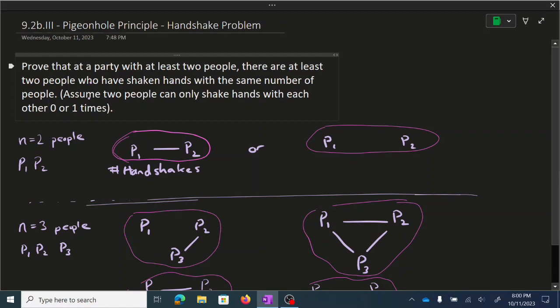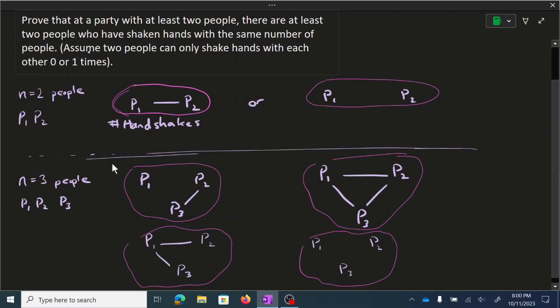So for me personally, when I read this, I get overloaded with hands, shaken people. I mean, just what even is a handshake, so forth. So I like to just go through case by case with small amounts of n equals two and n equals three people to solidify my understanding, and then from there try to abstract it. So we'll do that.